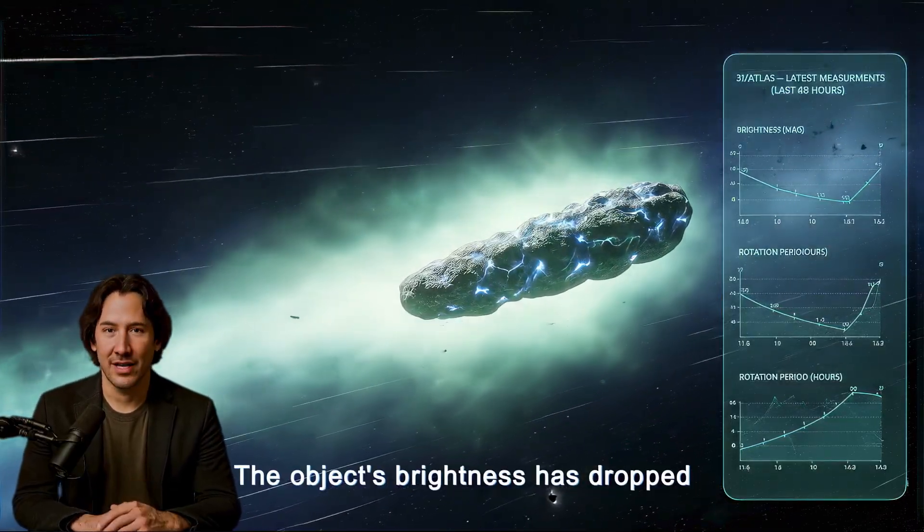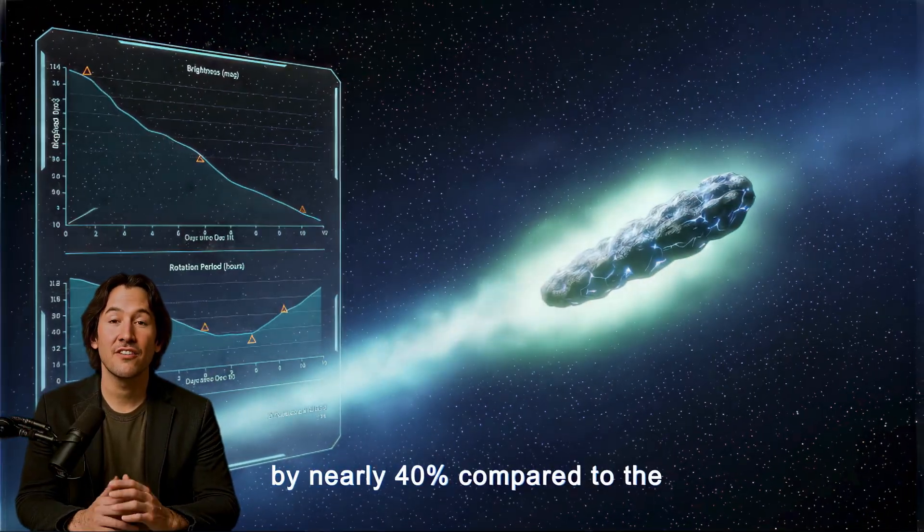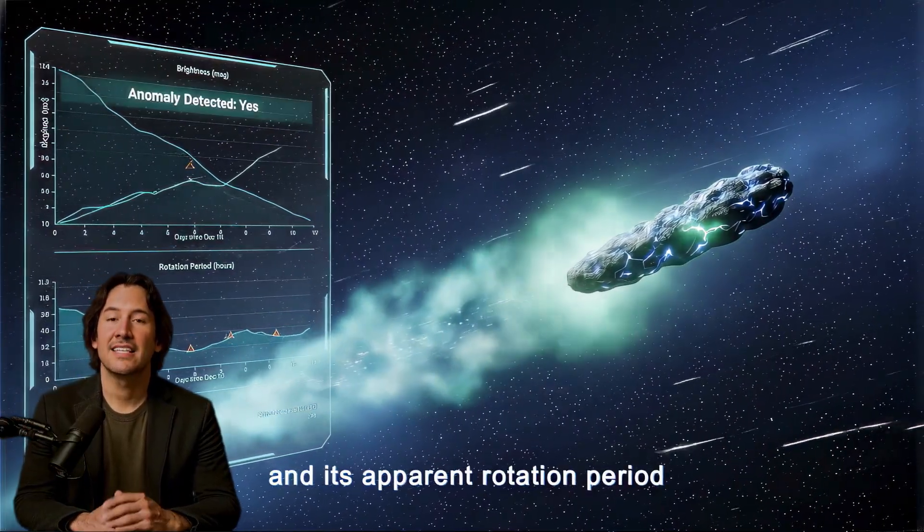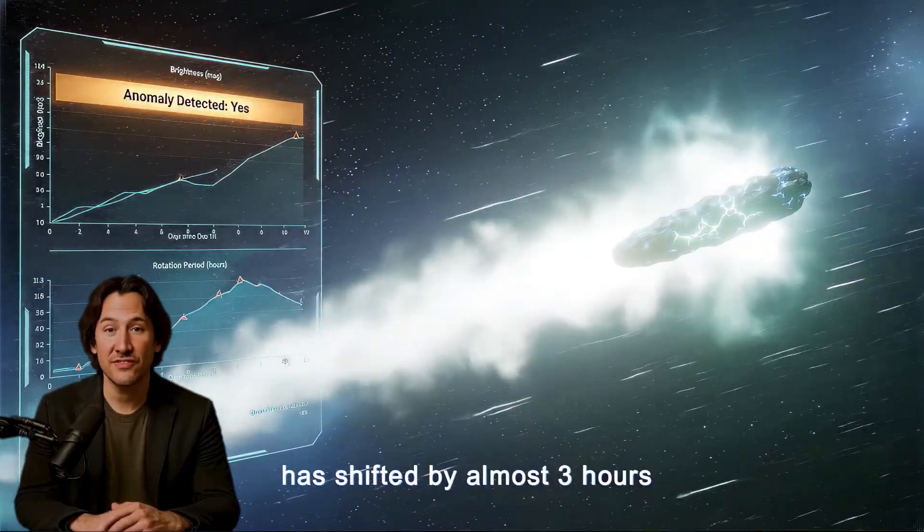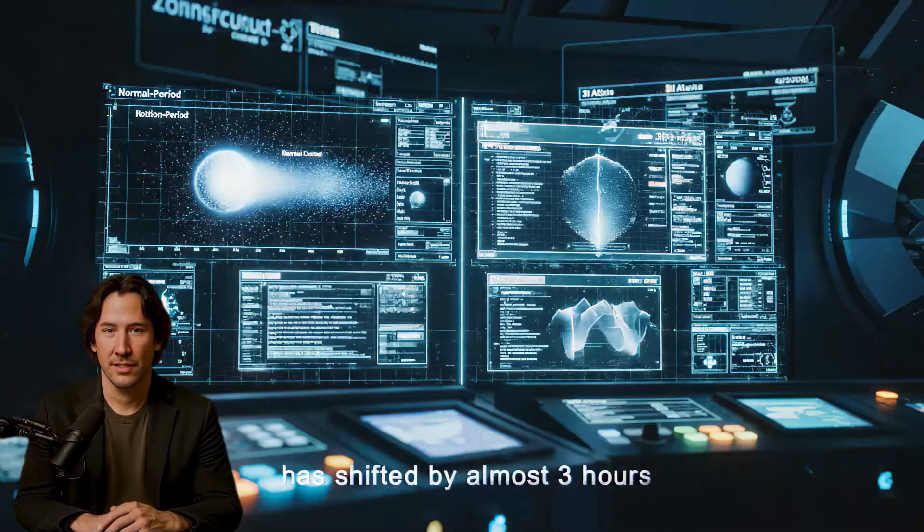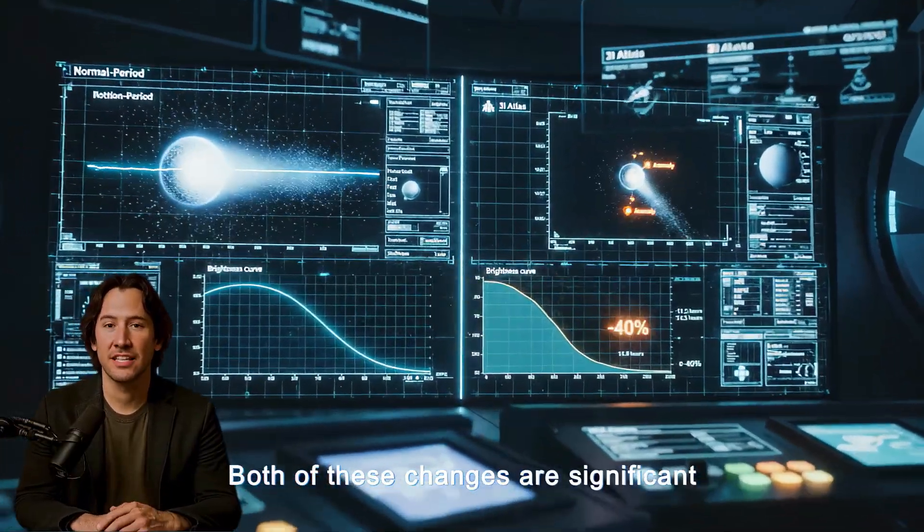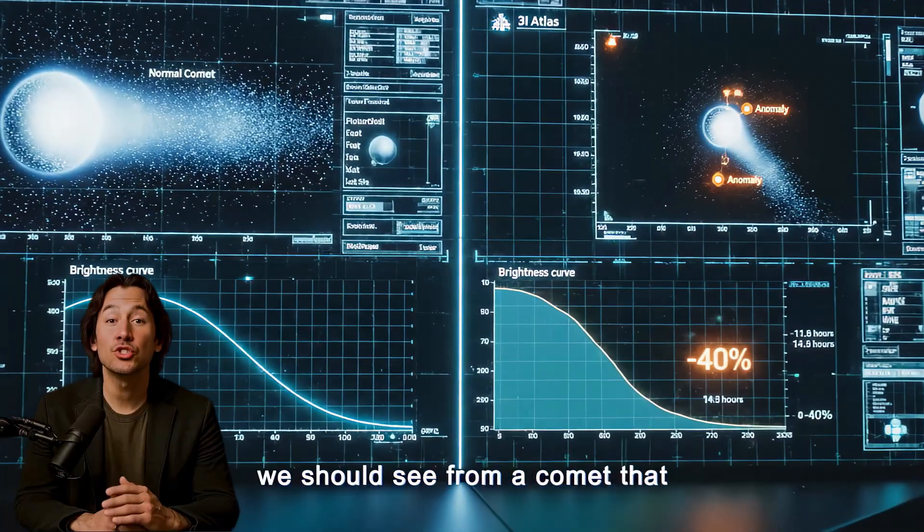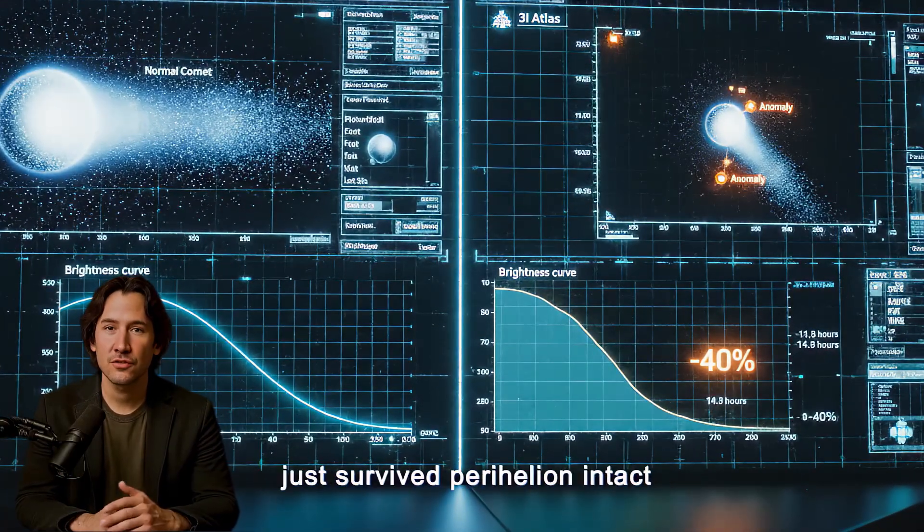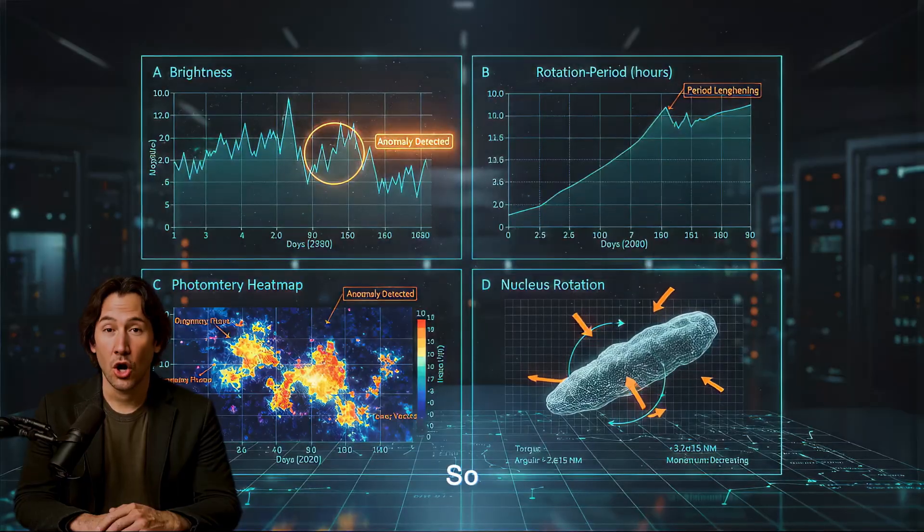The object's brightness has dropped by nearly 40% compared to the values published last week, and its apparent rotation period has shifted by almost three hours. Both of these changes are significant because they contradict what we should see from a comet that just survived perihelion intact.